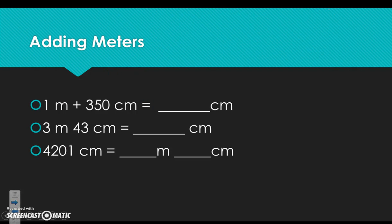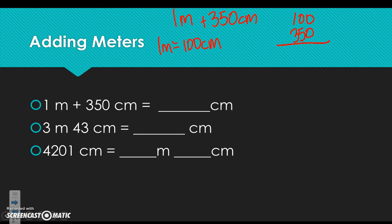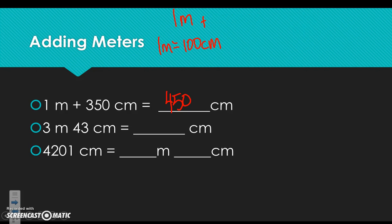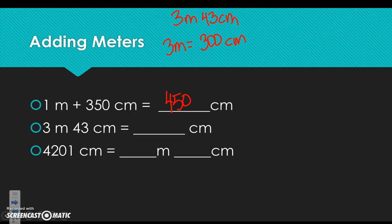Working with centimeters: 1 meter plus 350 centimeters — 1 meter equals 100 centimeters, so 100 plus 350 gives 450 centimeters. For 3 meters and 43 centimeters, 3 meters equals 300 centimeters, so putting 300 and 43 together gives 343 centimeters.